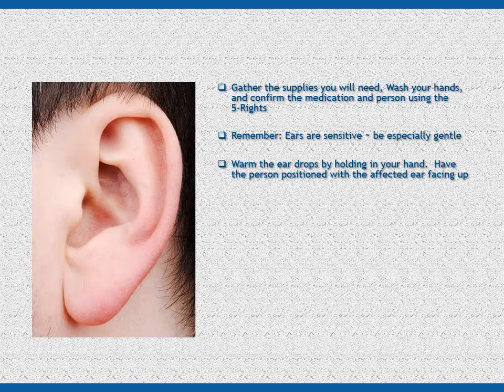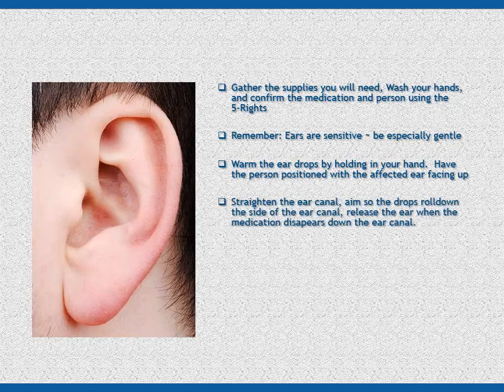Have the person lie on his or her side with the affected ear facing up. Straighten the person's ear canal. For adults, gently grasp the top of the ear and gently pull up and then back towards the back of the head. For infants or young children, grasp the ear lobe and gently pull down and then toward the back of the head.